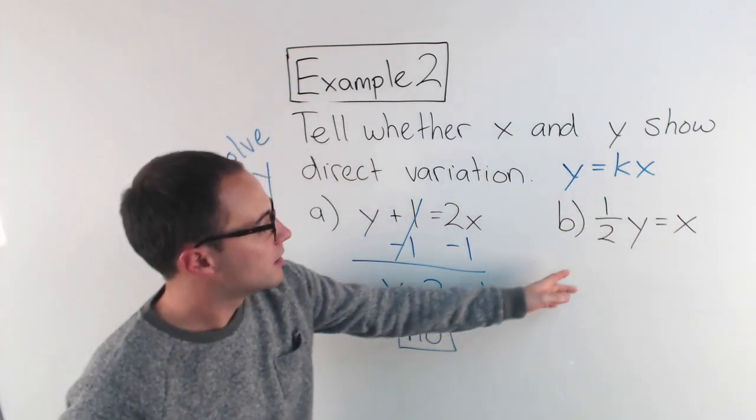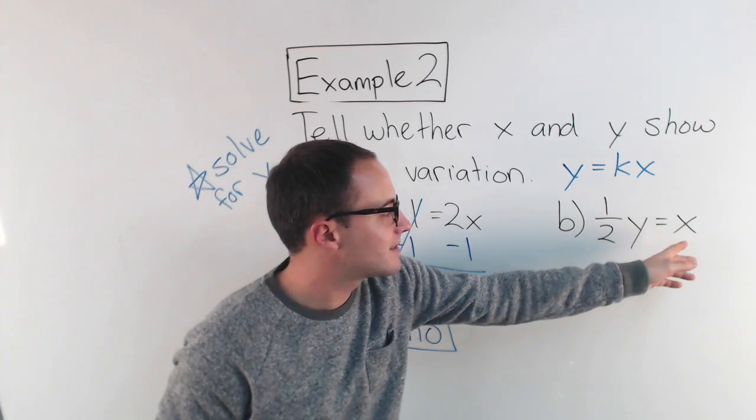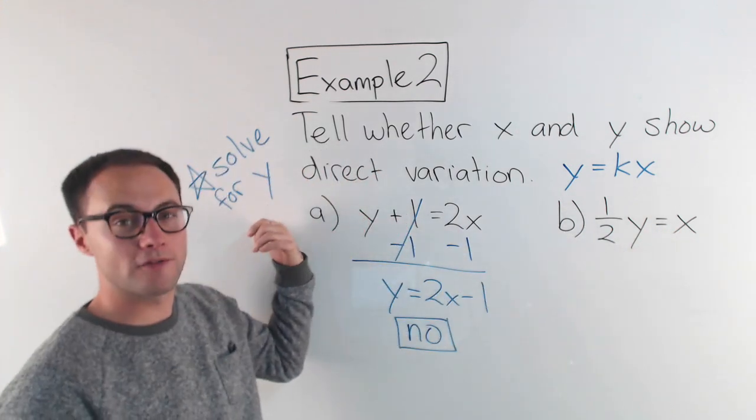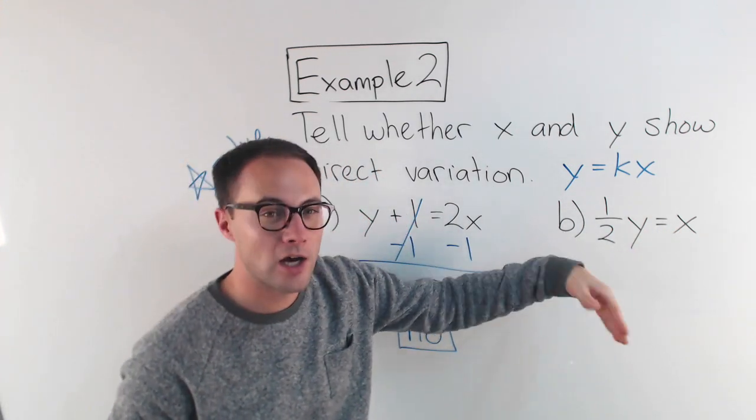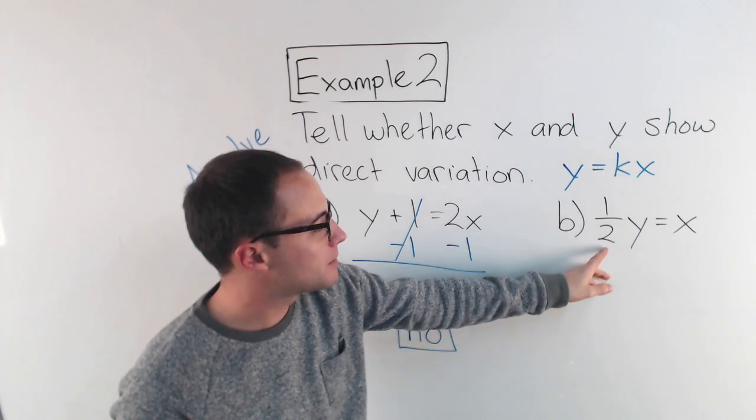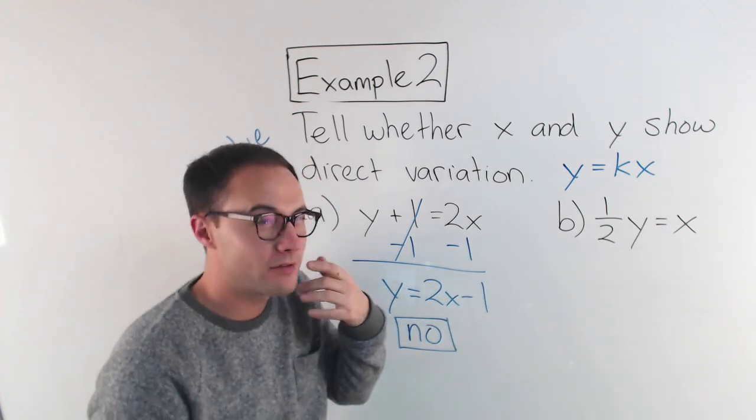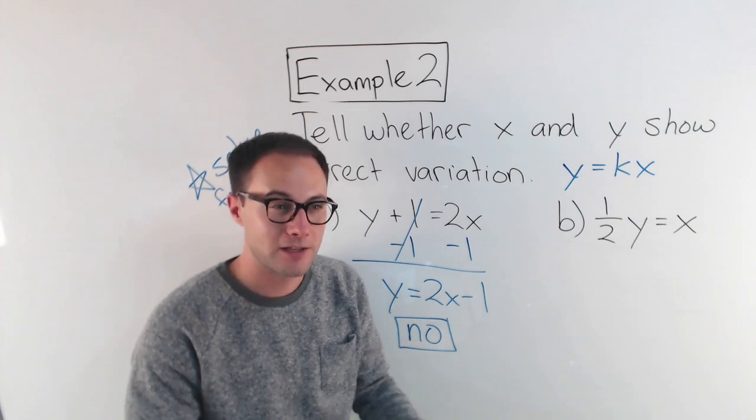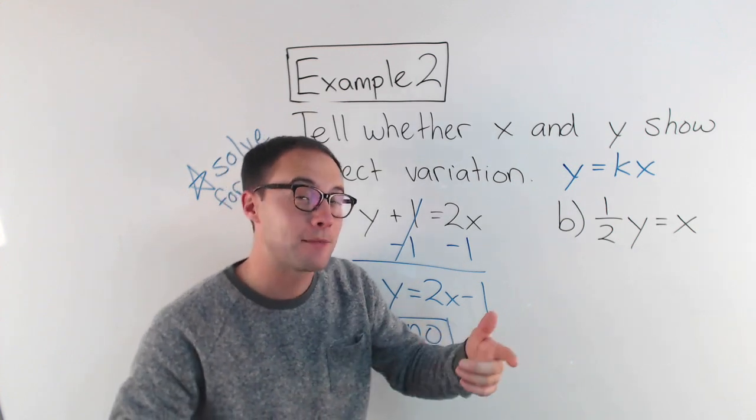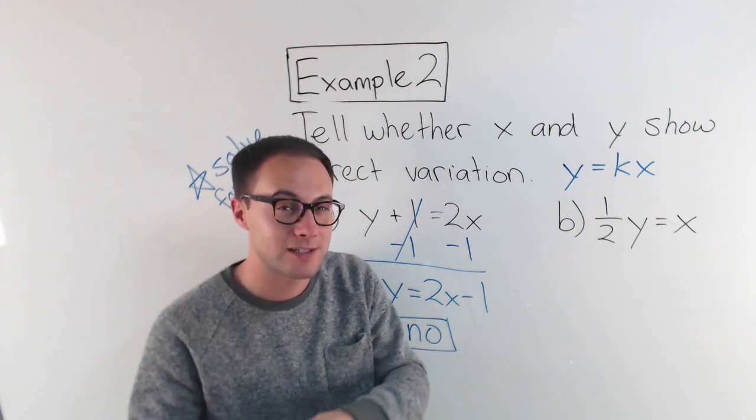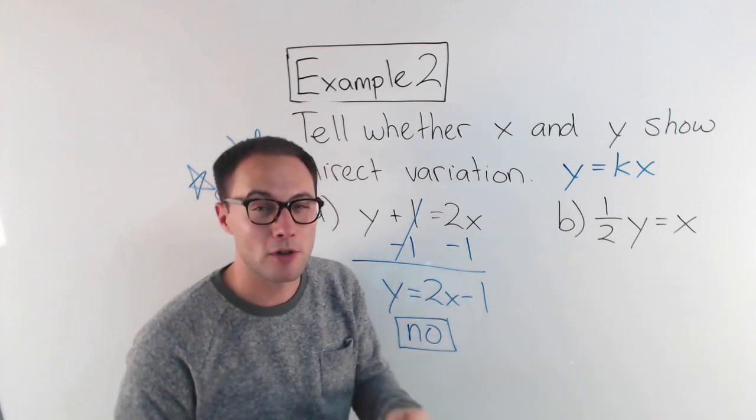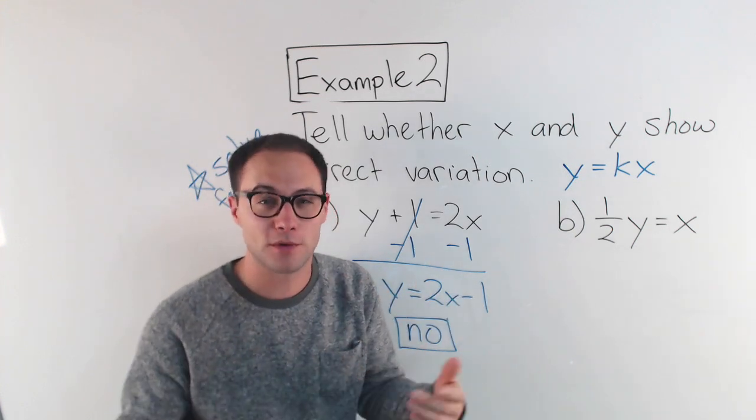Let's look at the next one. So 1 half y equals x. Again, I'm solving for y. I'm trying to get y alone. Right now, it's being multiplied by 1 half. So to get rid of that 1 half, I could divide by 1 half. But dividing by a fraction is the same thing as multiplying by its reciprocal. The reciprocal of 1 half is 2 over 1, which is 2.